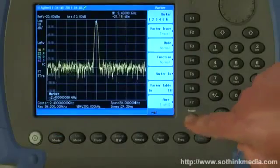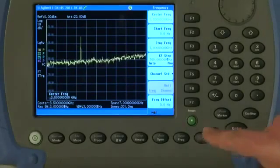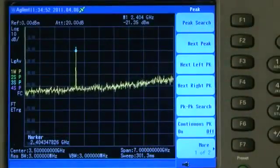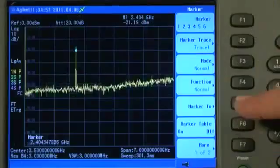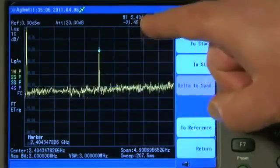Now if we don't know the frequency of the signal, there is another way we can do this. I will press the green Preset button to preset the instrument again, and this time I'm going to press Shift Marker Peak. That will put a marker on the highest signal on the display, and I can then press the Marker button and press Marker 2 Center Frequency. That has now tuned that 2.4GHz signal to the center of the screen. You can see here it says 2.404GHz, so it is roughly in the center of the screen, and I did not need to know what the frequency of it was.